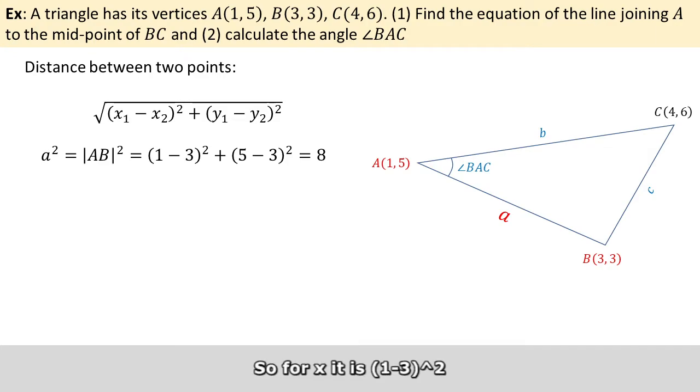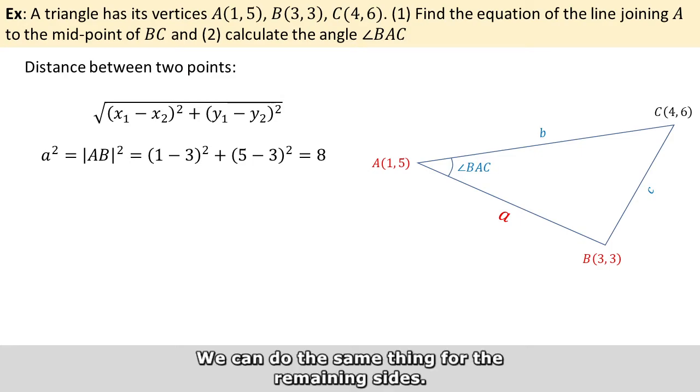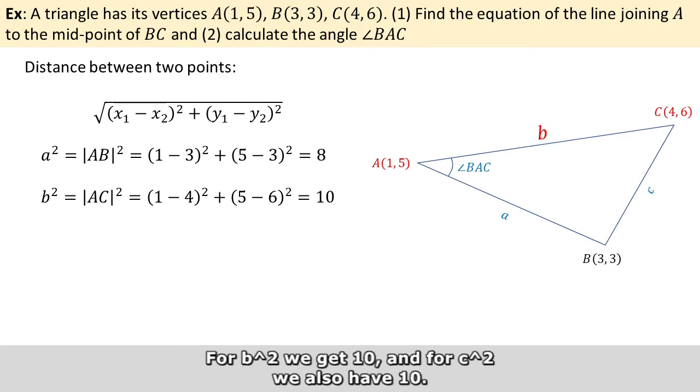So for X, it is 1 minus 3 squared, and for Y it is 5 minus 3 squared. This gives us 8 for A squared. We can do the same thing for the remaining sides. For B squared, we get 10, and for C squared, we also have 10.